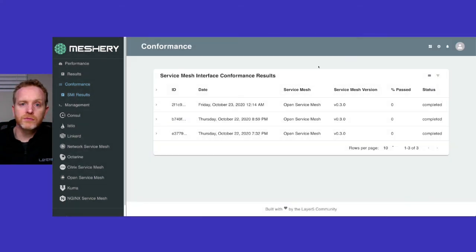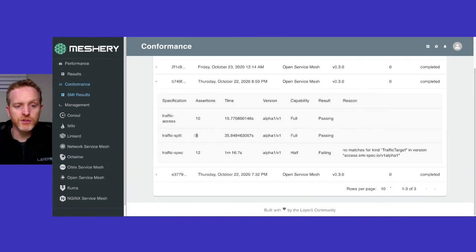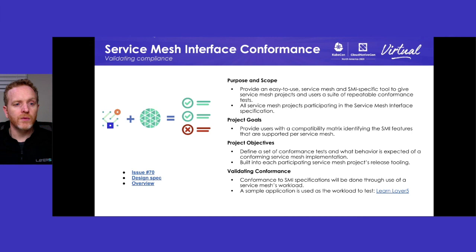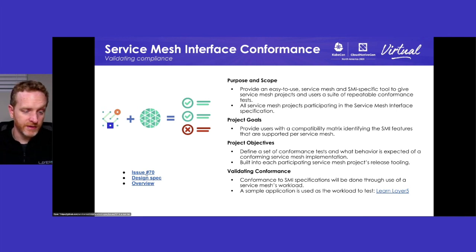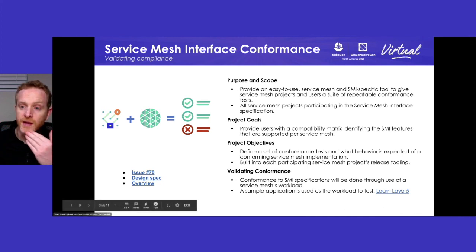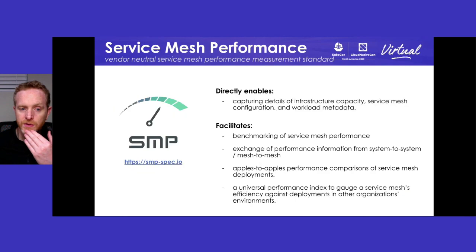I wouldn't read too much into any failures here — both the conformance test suite and each of the service meshes are just now beginning to undergo validation. We would expect a lot more flying colors for Open Service Mesh and the other six or seven service meshes that implement SMI. Eventually, each service mesh will run Meshery within their build process and publish results. For the details on what these assertions are, see issue number 70 in the SMI project — there's a design specification covering in depth what each test is, the sample workload used, and how it all works.